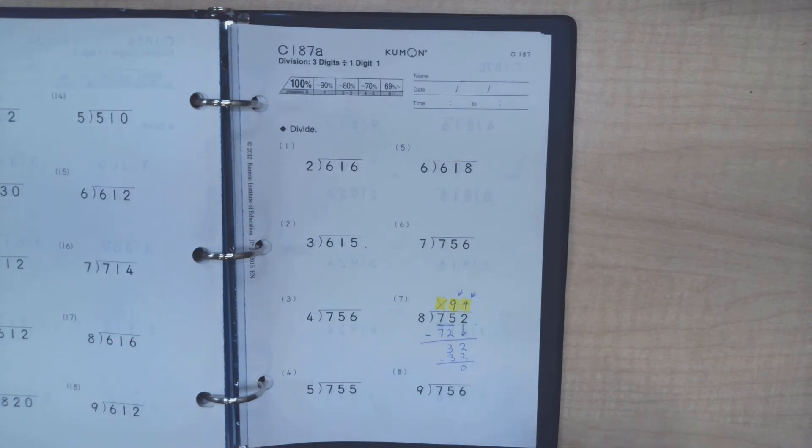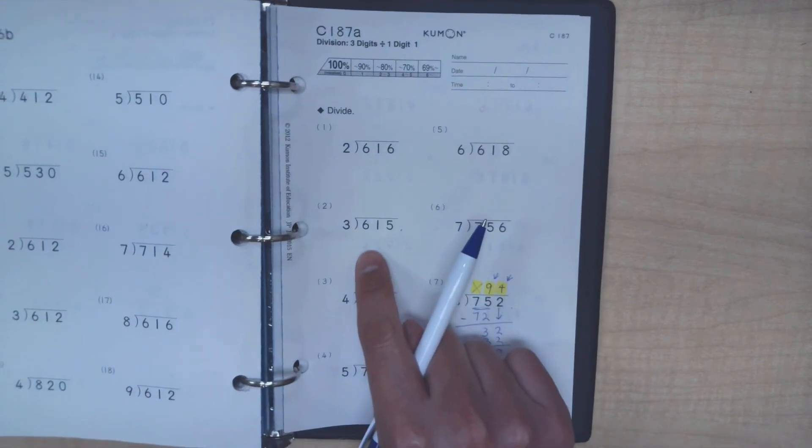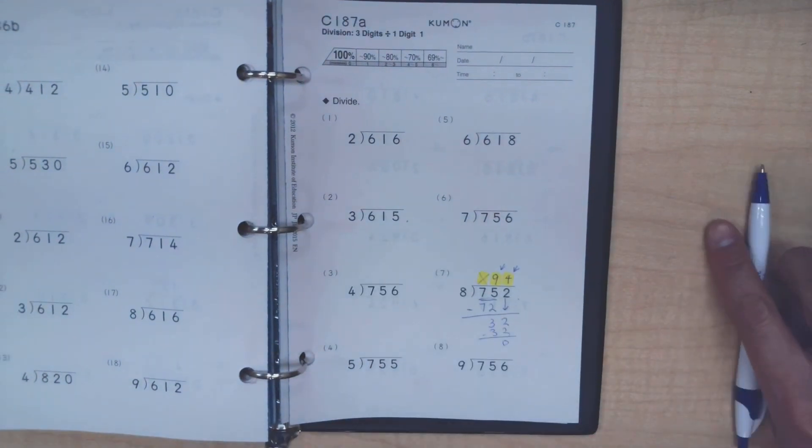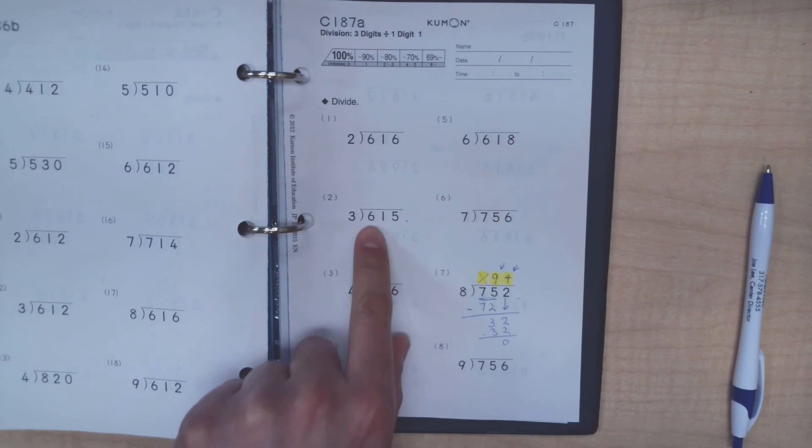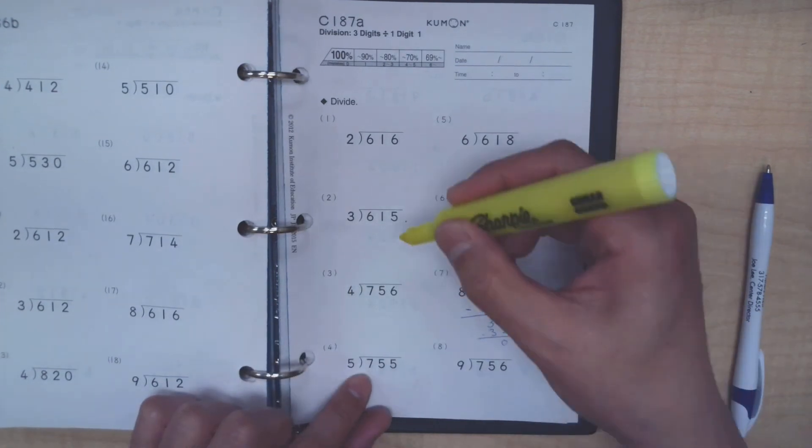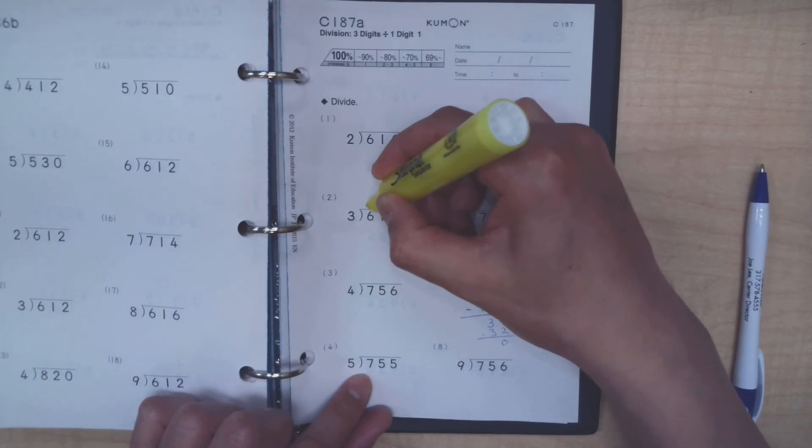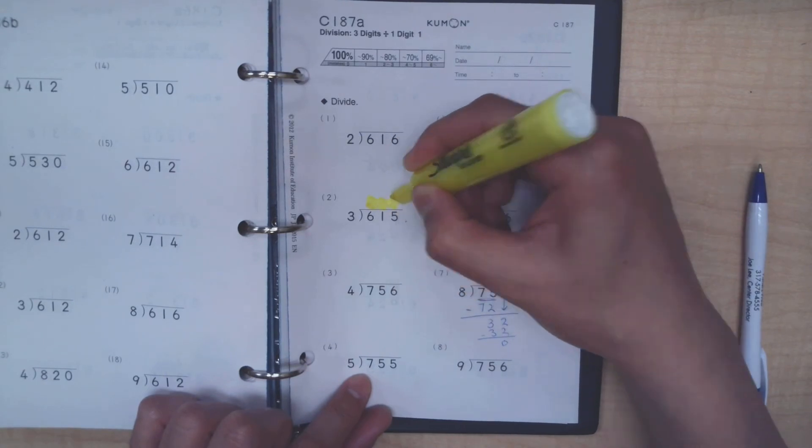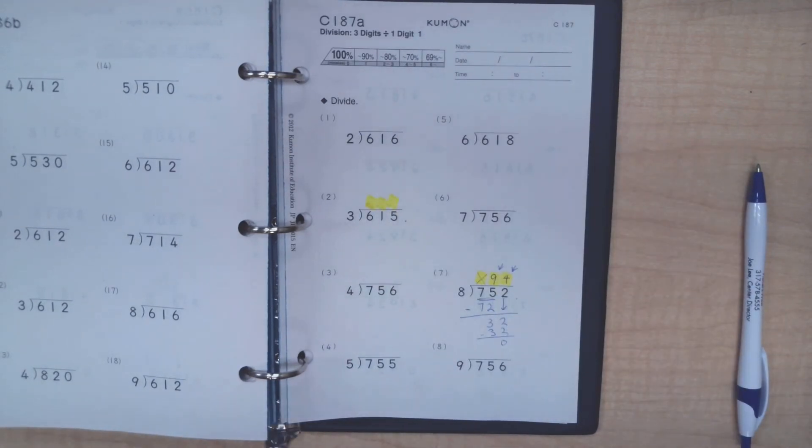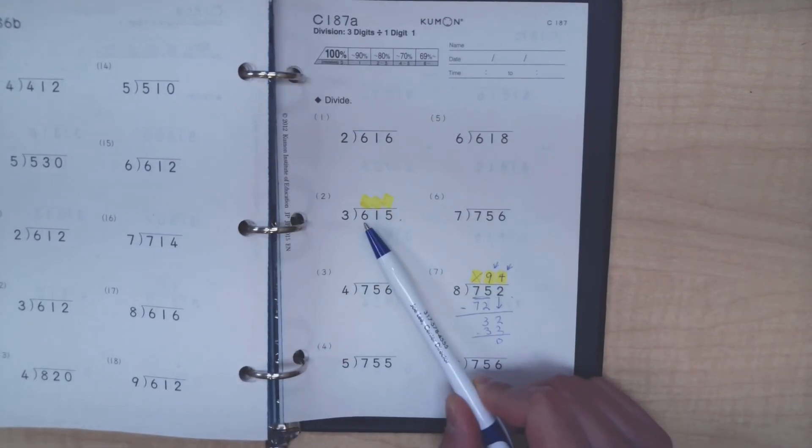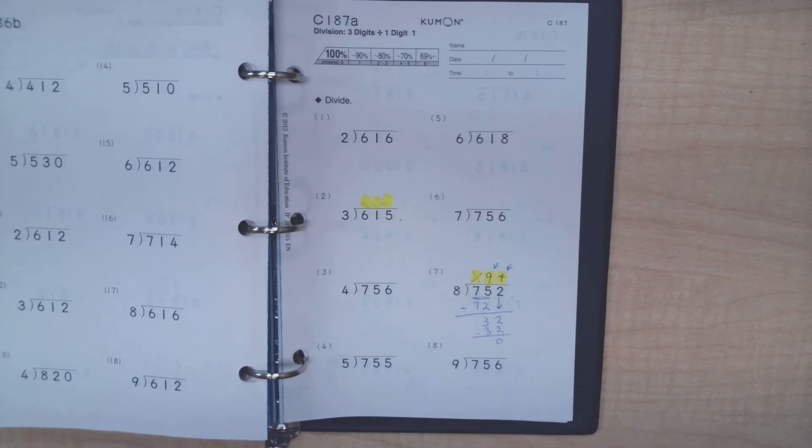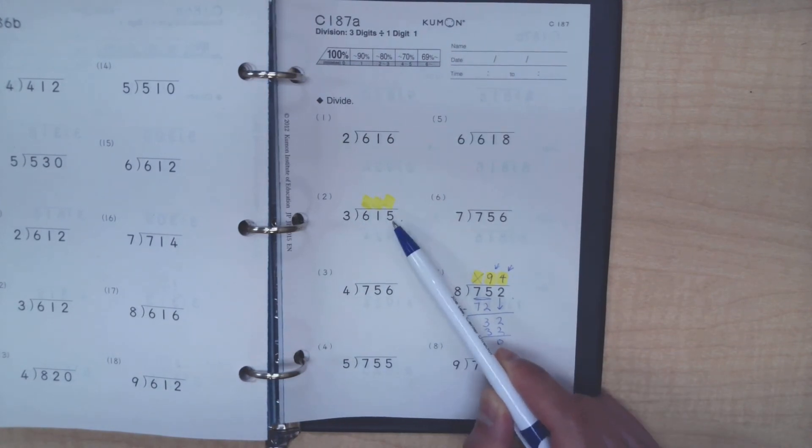How about we move into number 2 here? Things can be a little bit different. Again, we are working with 3 digits inside the division sign, so we are going to imagine that there are 3 spots that we can potentially put our answers in, 1 spot above each one of these 3 digits: 1 above the 6, 1 above the 1, and 1 above the 5.